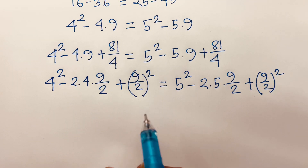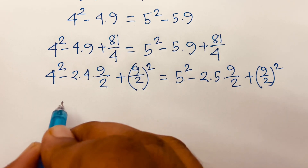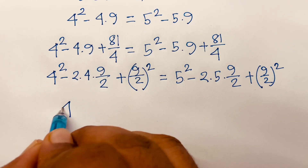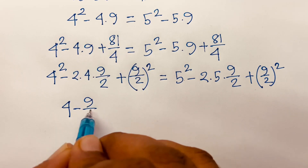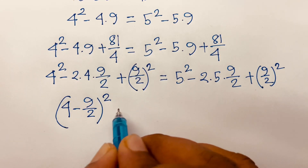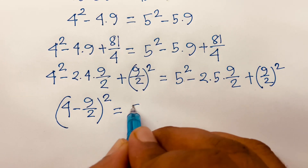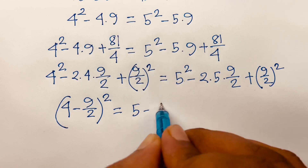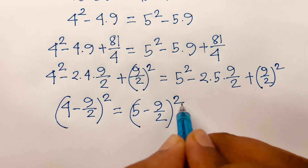Then I can say easily it will be the a minus b whole square form, because we know that a² minus 2ab plus b² equals (a minus b)². So the left side is (4 minus 9/2)² and the right side is (5 minus 9/2)².